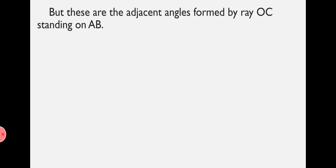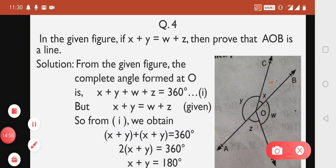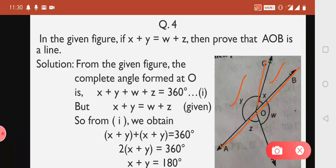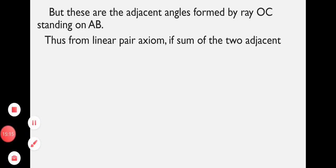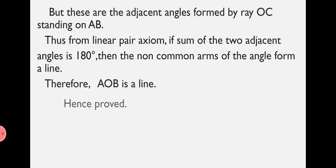These are the adjacent angles formed by Ray OC standing on AB. These two angles X plus Y are formed when Ray OC stands on AB. Thus, from the Linear Pair Axiom, if the sum of two adjacent angles is 180 degrees, then the non-common arms of the angles form a line. Therefore, AOB is a line. Hence proved.